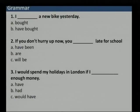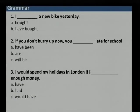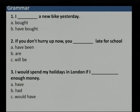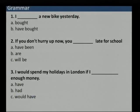Question 3: 'I would spend my holidays in London if I dash enough money.' The whole situation is hypothetical. In a hypothetical situation, you use 'had.' So the answer is option B: 'if I had enough money.' That means I do not currently have money — that is why I am not in London — but if I had it, I would be there.